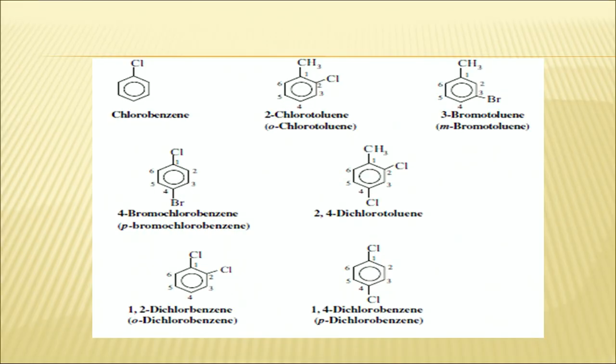For aromatic hydrocarbons containing halogens — haloarenes — if chlorine is attached to benzene, it becomes chlorobenzene, using the prefix chloro before the aromatic compound name. If there is also a CH3 substituent, it becomes 2-chlorotoluene, because toluene is preferred as position 1, and the chloro group is at position 2, as discussed in lesson 23.